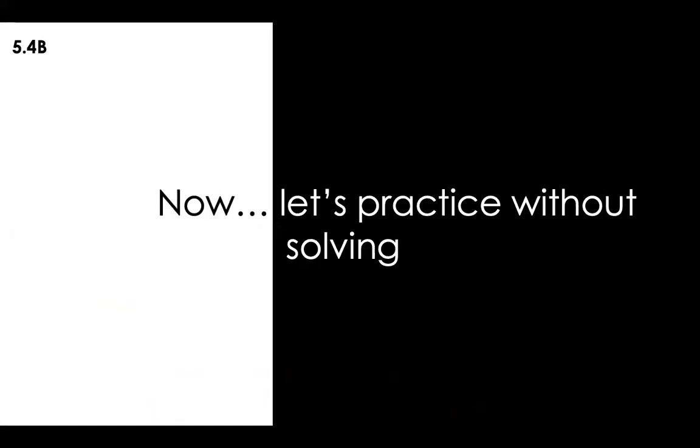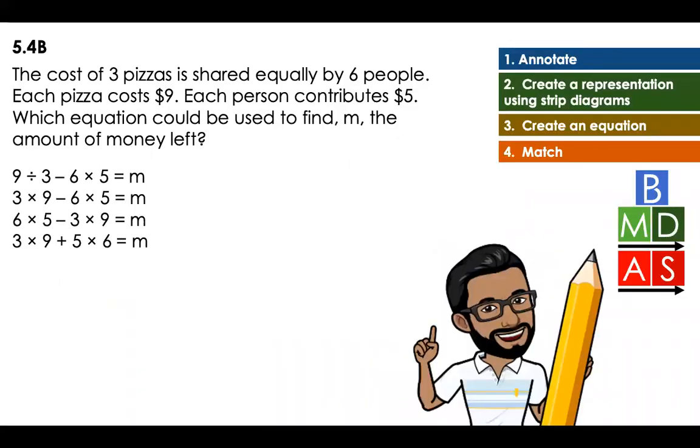Now let's practice without solving, just representing. The cost of three pizzas is shared equally by six people. Each pizza costs $9. Each person contributes $5. Which equation could be used to find M, the amount of money left?